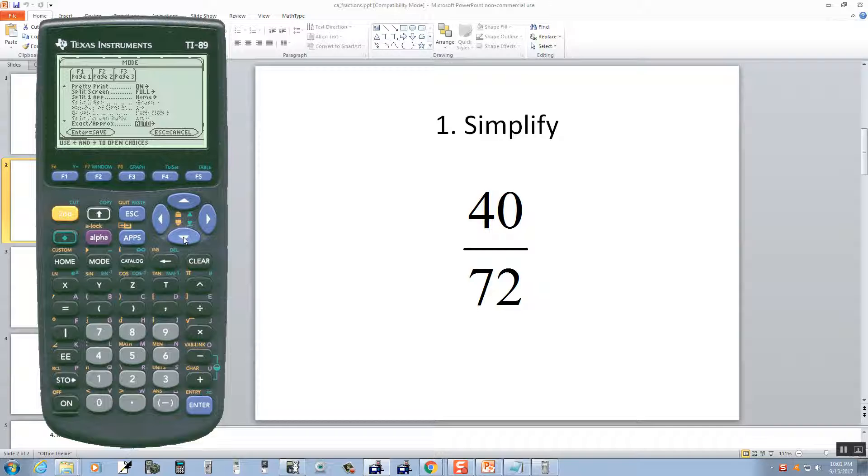On the second page, what you're going to find is exact/approximate, and mine says auto. If you right arrow over to it, if you have approximate set, and I push enter, and then enter to save, and now if you put in your 40 divided by 72 and do enter, you get a decimal. So you may not get that fraction if you have that option set.